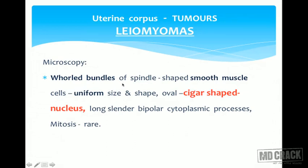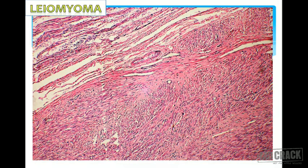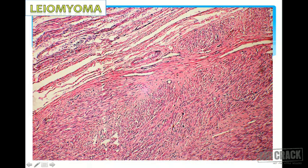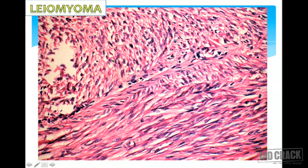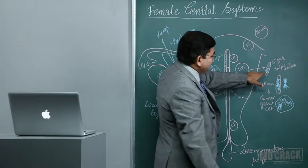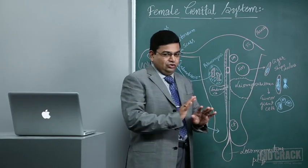Microscopically, leiomyomas consist of whorls or intersecting bundles of smooth muscle cells with a characteristic cigar-shaped nucleus — oval to elongated, with uniform size and shape, and long slender bipolar cytoplasmic processes. Mitoses are very rare; if present, they are normal bipolar mitoses. There are no features of anaplasia. The cells are arranged in intersecting bundles, whorls, or fascicles within a thick fibrous collagenous stroma.